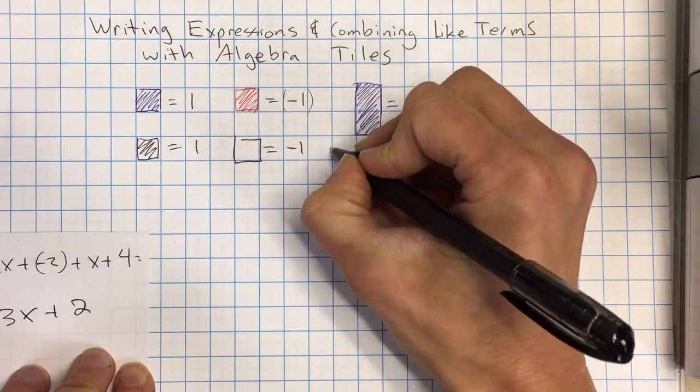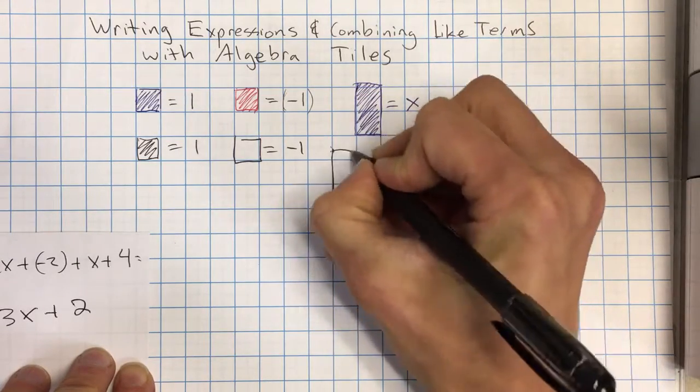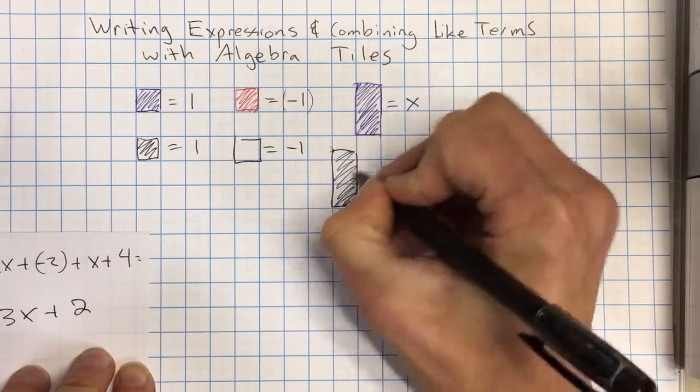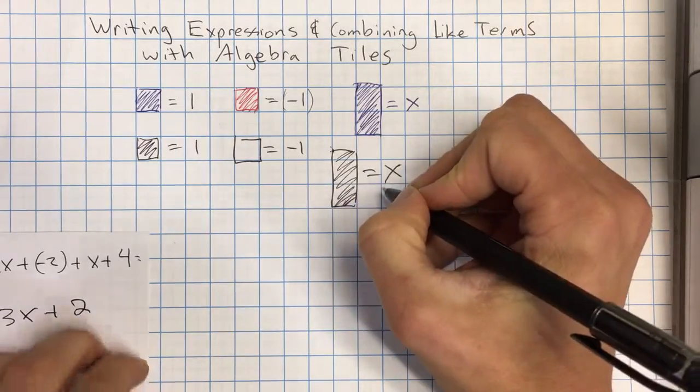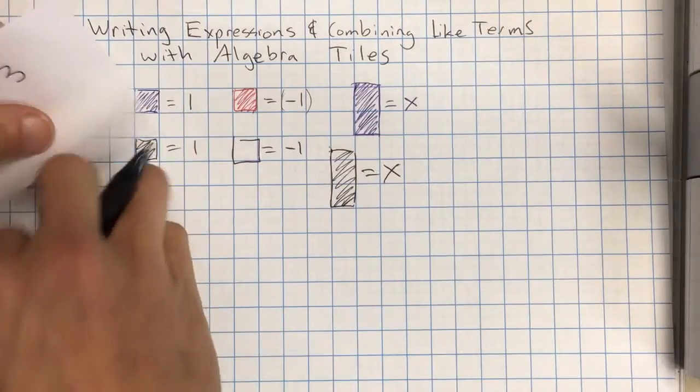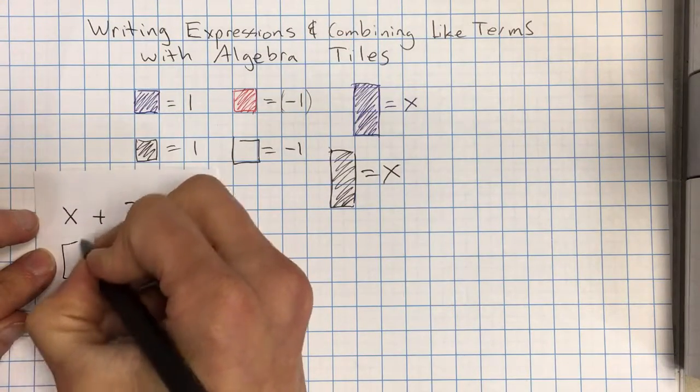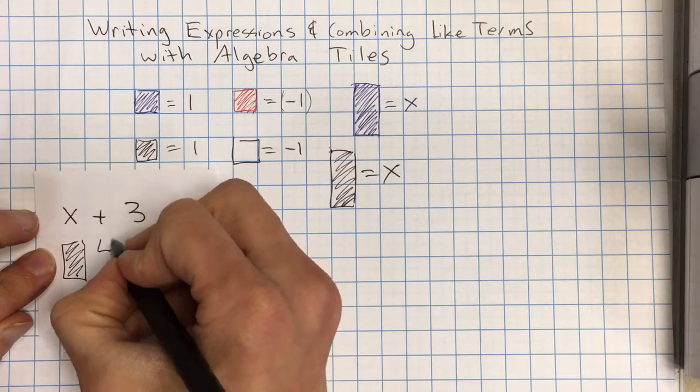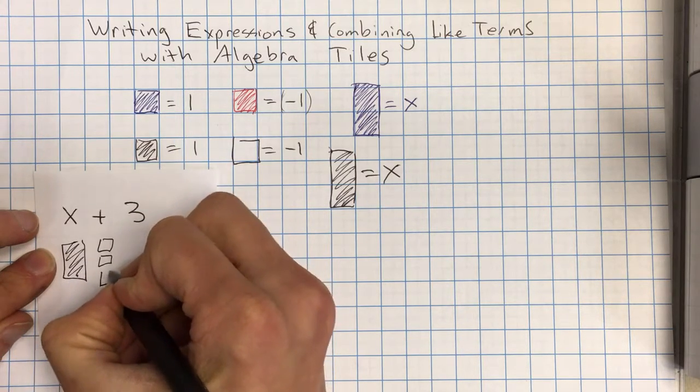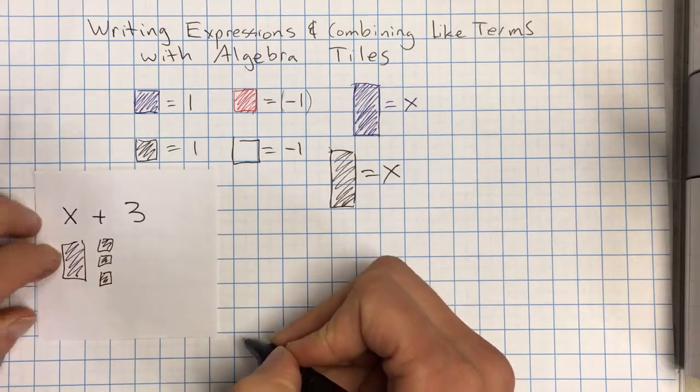And then you could just do a long rectangle and shade that in quickly and say that's equal to x. So if I wanted to, for example, show x plus 3, I would just draw a rectangle and then 3 of the little squares. And shade those in. And that shows x plus 3.